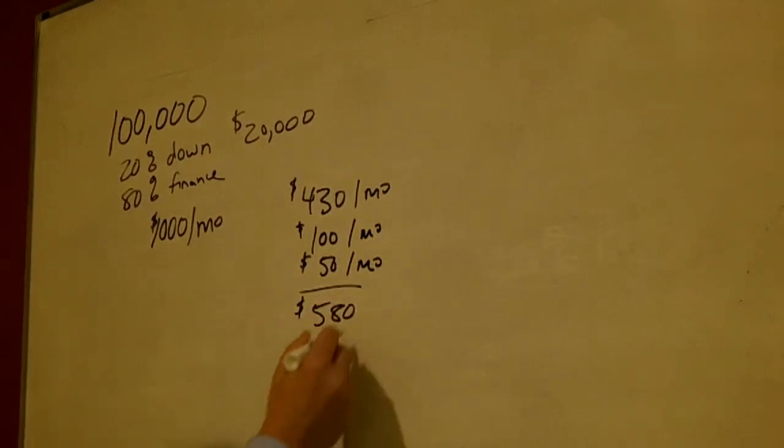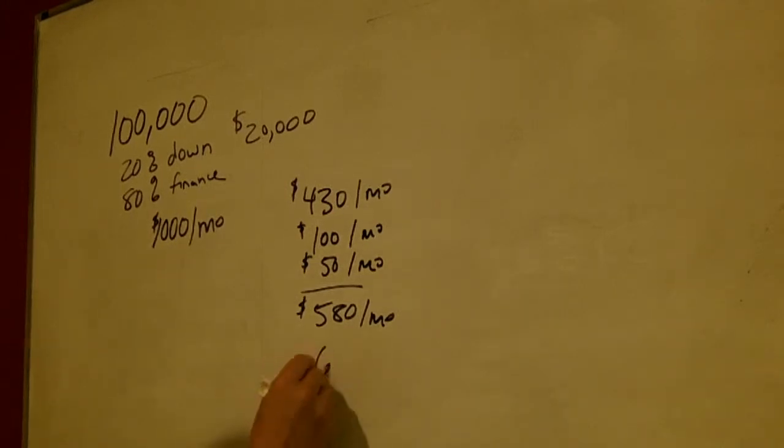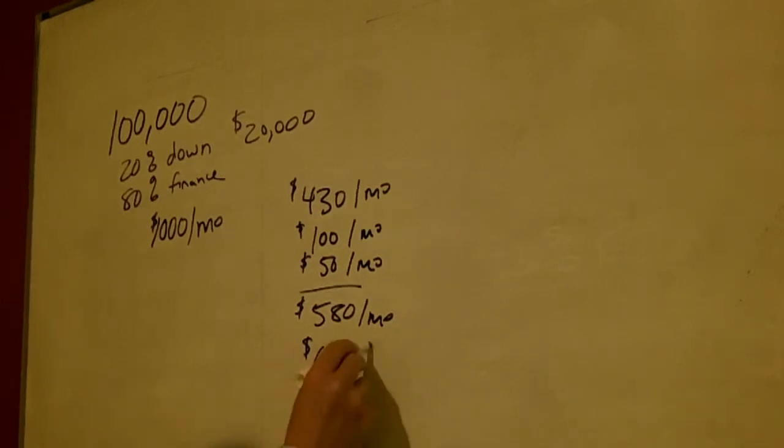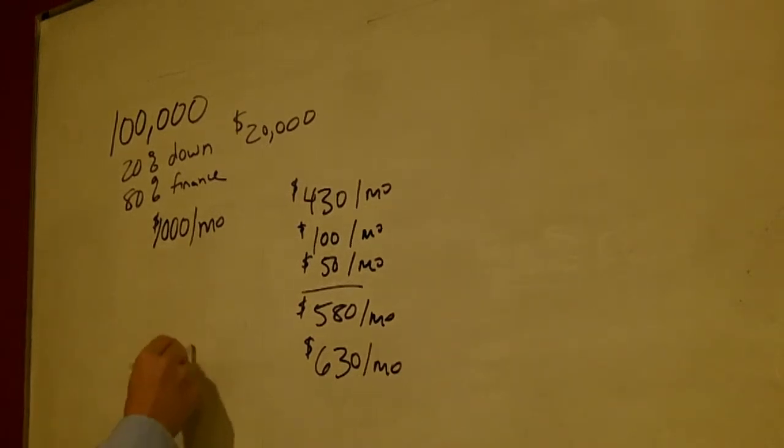If we figure around $50 per month average for expenses, based on a house in reasonably good condition, then you're looking at $630 per month total cost to have that house with a loan of $80,000. But you're bringing in $1,000 per month from your tenant.